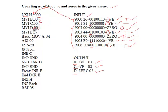For the loop counter I use the E register, since B, C, and D are engaged. I initialize it with MVI E,07 to count seven inputs. The actual program starts at the label BACK, where I use MOV A,M to move the memory contents pointed to by the HL pair into accumulator A.